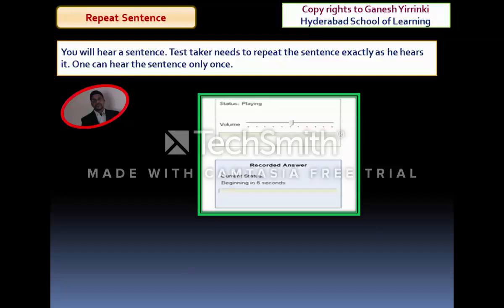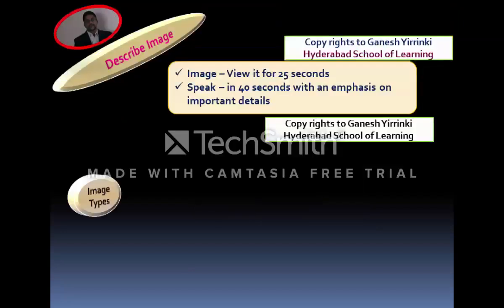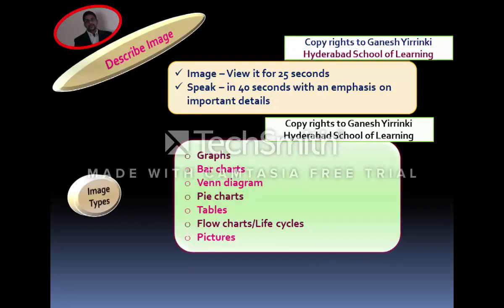The next question item in Speaking is Repeat the Sentence. When this question appears on the screen, you will listen to a sentence from a presenter and then repeat that sentence exactly as you heard it. You can hear the sentence only once. After the question appears, wait three to four seconds for the audio to be released, then immediately present the sentence. The sequence is very important.